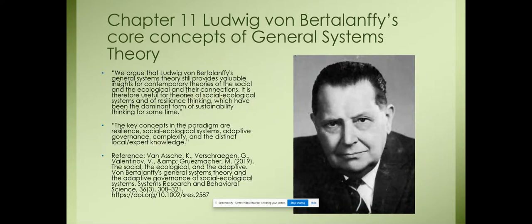For chapter eleven, the core concepts of general systems theory: important aspects include concepts like organization, wholeness, directiveness, teleology, and differentiation. These are alien to conventional physics, but they pop up everywhere in the biological, behavioral, and social sciences and are indispensable for dealing with social groups. Thus a basic problem posed to modern science is a general theory of organization. General systems theory is in principle capable of giving exact definitions for such concepts and, in suitable cases, putting them to quantitative analysis. General systems theory is a general science of wholeness.